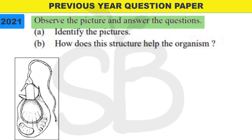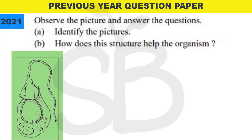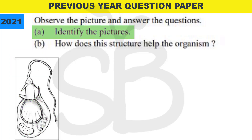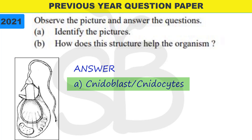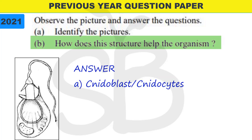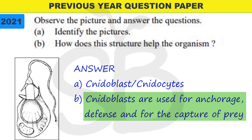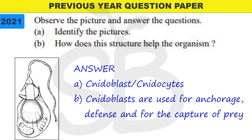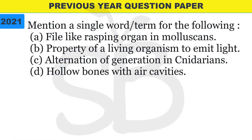First question from the 2021 annual exam: observe the picture and answer the question. We will discuss this diagram. How does this structure help the organism? The answer is: it is used for anchorage, defense, and for the capture of prey. This structure belongs to the phylum Cnidaria - it is the Nidoblast.